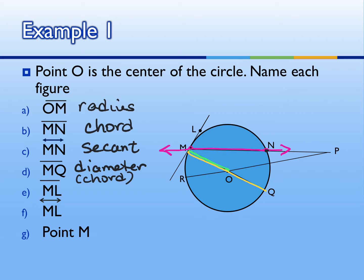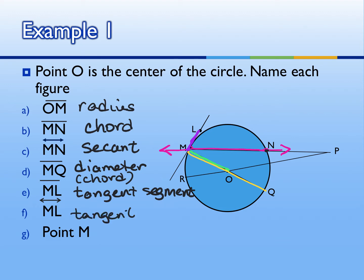If you list it as a chord it would still be correct. Next, segment ML is a tangent segment because of the segment picture on top of the capital letters. As soon as they change that picture to a line, then it just becomes a tangent, because by definition a tangent without the word segment is a line. Make sure you specify. Point M is the point of tangency — it's where the tangent hits the circle.